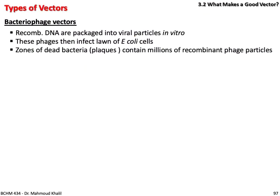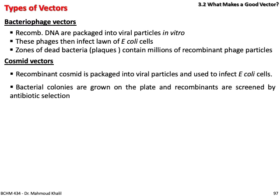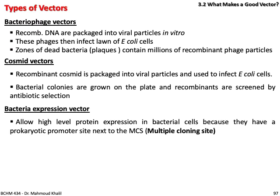Bacteriophage vectors: recombinant DNA is packaged into viral particles in vitro. These phages then infect lawns of bacterial cells, forming zones of dead bacteria called plaques, which contain millions of recombinant phage particles. Cosmid vectors: recombinant cosmid is packaged into viral particles and used to infect E. coli cells. In both types, the virus infection mechanism transfers DNA into bacteria. Bacterial colonies grown on plates are screened by antibiotic selection.